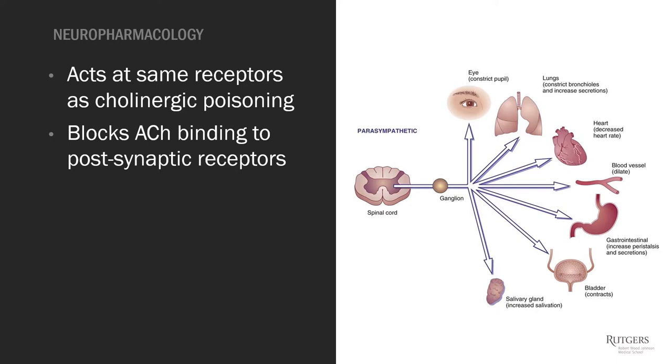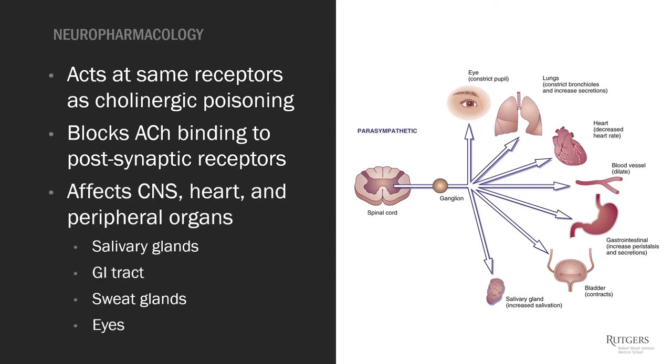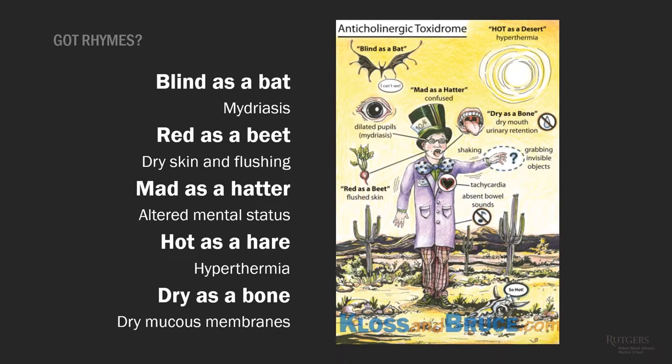The memory tool for anticholinergic toxins is: blind as a bat, red as a beet, mad as a hatter, hot as a hare, dry as a bone. Blind as a bat describes dilated pupils impairing focus. Red as a beet describes dry skin and flushing. Mad as a hatter notes the altered mental status. Hot as a hare describes the hyperthermia. And dry as a bone describes the dry mucous membranes.